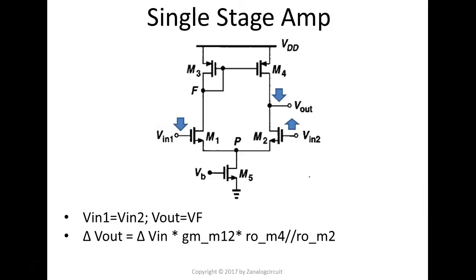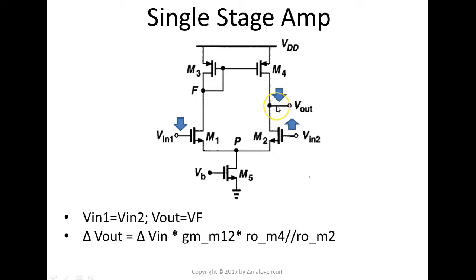As mentioned, when Vin1 equals Vin2, Vout equals the quiescent voltage at node F. Now if we keep Vin1 constant and raise Vin2 a little bit, the drain voltage Vout will go down. By how much? The change in Vout equals the delta voltage on Vin2 multiplied by the gm of that transistor, then multiplied by the output resistance at the Vout node — which is the output resistance of M4 in parallel with the output resistance of M2.